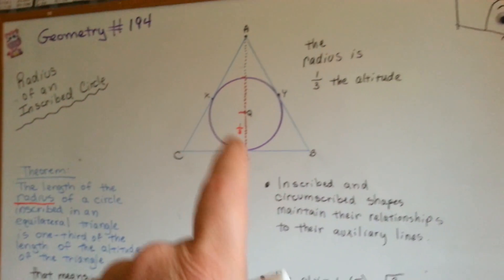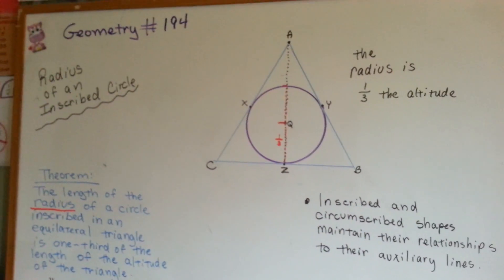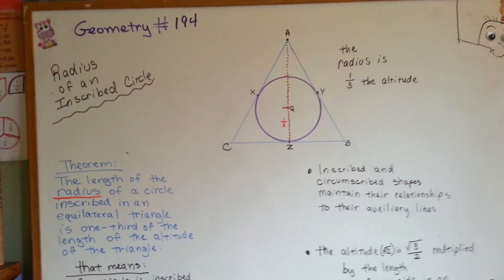That is our theorem about the radius being one-third of the altitude. I hope this helps you do a proof, and I'll see you next video.